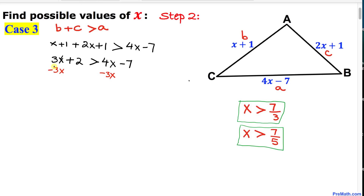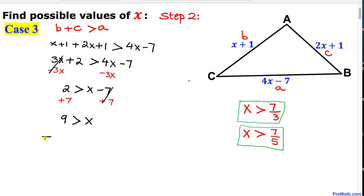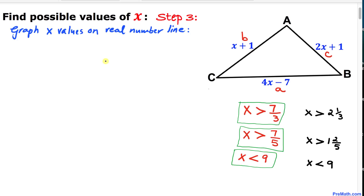Subtracting 3x from both sides, we end up with 2 is greater than x minus 7. Adding 7 on both sides gives 9 is greater than x, or equivalently, x is less than 9.